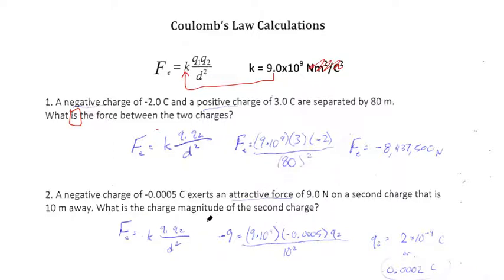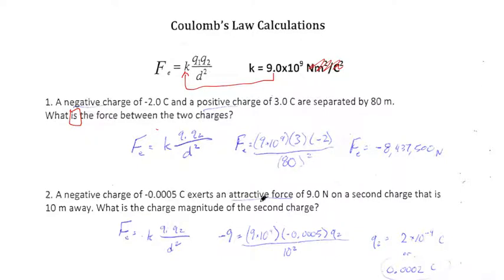Alright, number 2: a negative charge of negative 0.0005 Coulombs — you could also write that as negative 5 times 10 to the negative 4th — has an attractive force of 9 Newtons on a second charge that is 10 meters away. What's the charge magnitude of the second charge? Charge magnitude is just a fancy way of saying what's the number size of that second charge. We know which equation we're using because we're looking for electrostatic attraction or repulsion. We do know that this is an attractive force.